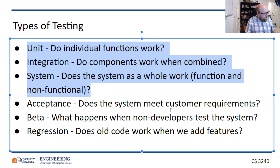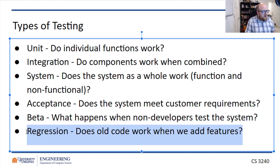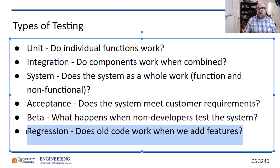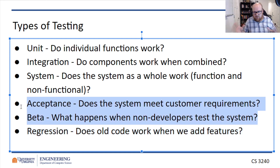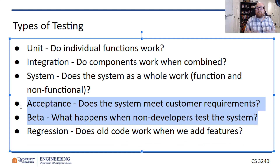The top testing types — unit, integration, system — plus regression are very developer-focused and verification-based: does the system do the thing the developers intended, correctly? Did we build it right? Whereas acceptance and beta testing are much more customer-facing and validation-focused: did we build the right system? Did we build the system the customer wants?